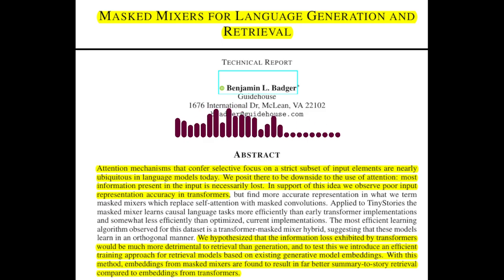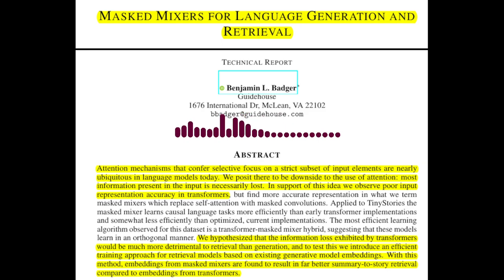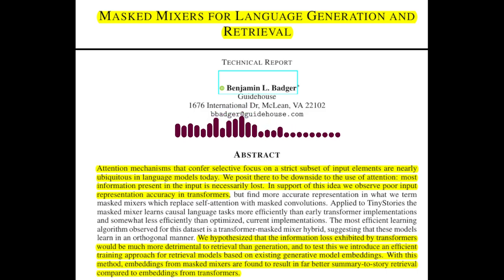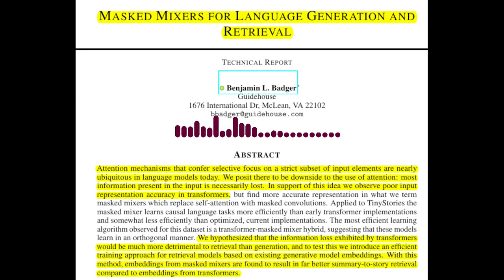The key arguments: the paper argues that attention mechanisms, while powerful, have a significant drawback — they inherently discard information from the input. This information loss can be detrimental, especially for tasks like retrieval where preserving input details is crucial. The authors propose masked mixers as a solution, demonstrating their ability to retain more information about the input compared to transformers.